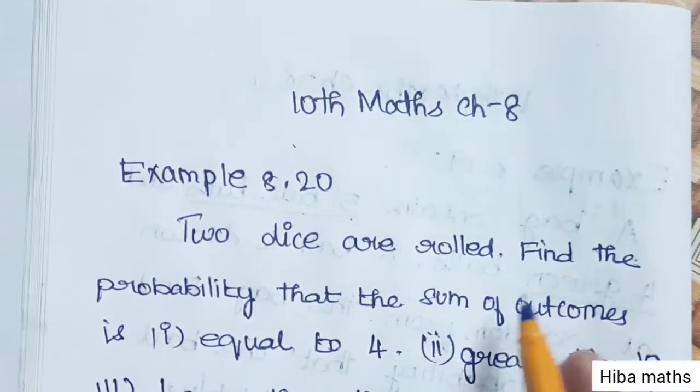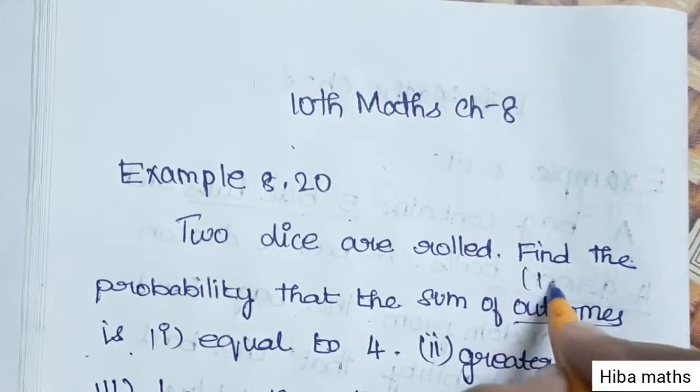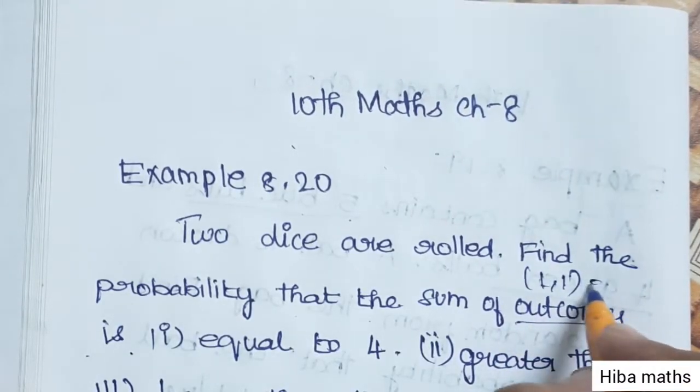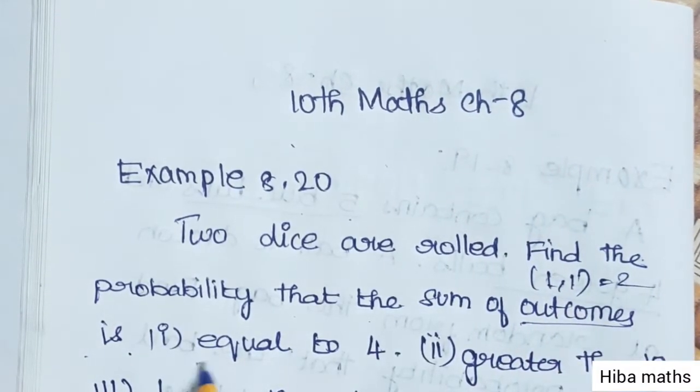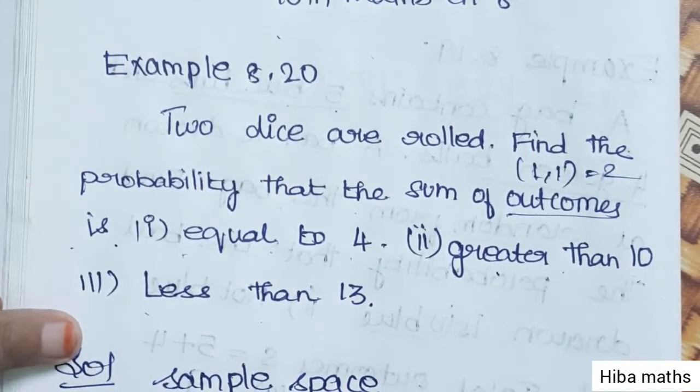Question: Two dice are rolled. Find the probability that the sum of outcomes is equal to 4, greater than 10, and less than 13.